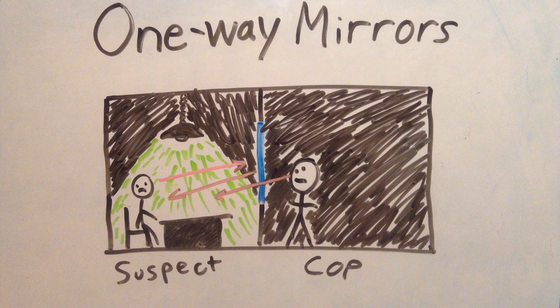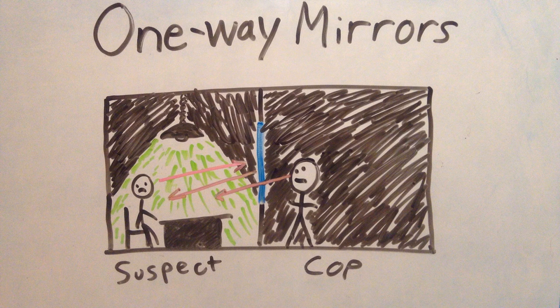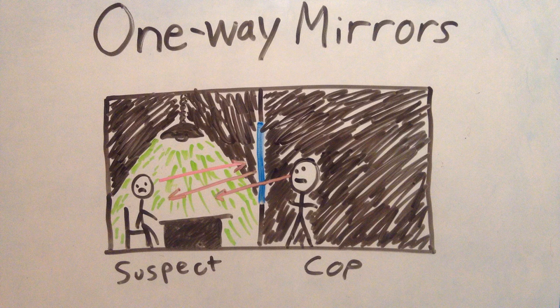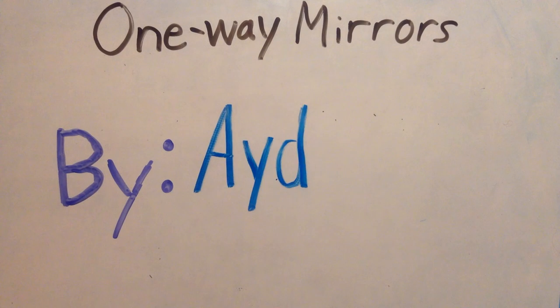The cop's dark room acts as the opaque background for the mirror, but the cop is still able to see through the one-way mirror. The suspect's room is lit up so more light is reflected on the mirror and the suspect cannot see through the mirror. And that is how one-way mirrors work.